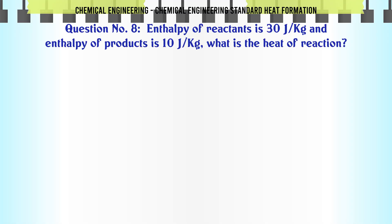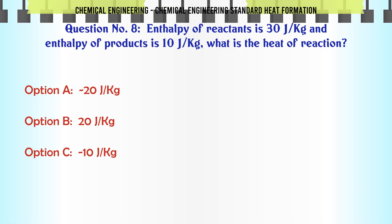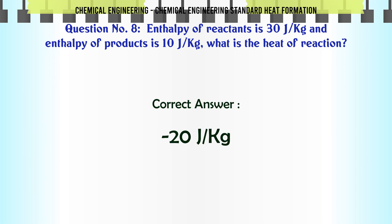Enthalpy of reactants is 30 J/kg and enthalpy of products is 10 J/kg. What is the heat of reaction? A) 20 J/kg. B) -20 J/kg. C) 10 J/kg. D) -10 J/kg. The correct answer is -20 J/kg.